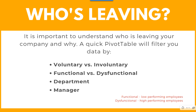Once you've done the calculation, it's important to understand who's leaving your company and why. A quick pivot table will filter your data by voluntary versus involuntary, functional versus dysfunctional, department, or manager. Just to clarify: functional is normally when you have low-performing employees leaving the company — that's a functional termination. Dysfunctional is the opposite, when high-performing employees leave your company.